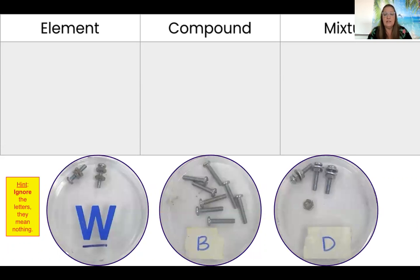Now this is the part of the in-class lab. I took pictures of what I did and this is the virtual part. So they have to drag and drop which one of these looks like an element. So obviously B would be an element because they're all the same. And next one would be a compound. Two or more. So that would be W. And then obviously mixture would be D.